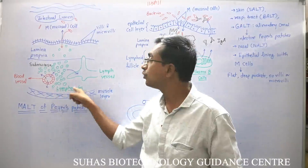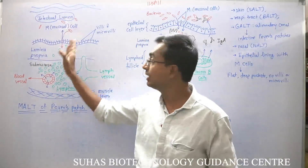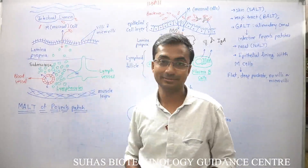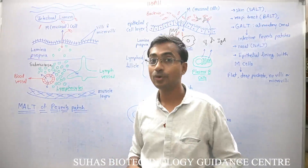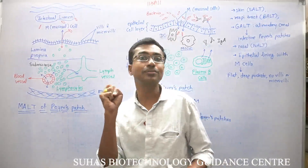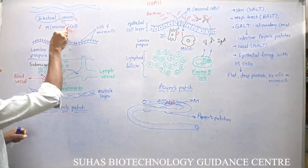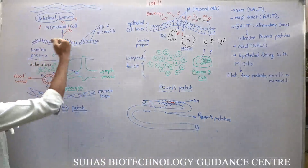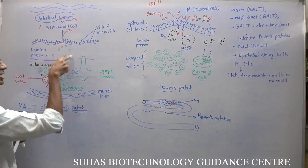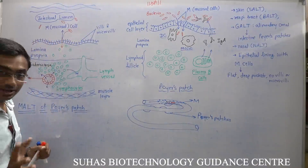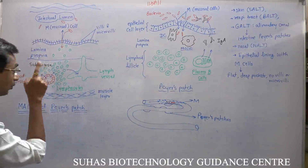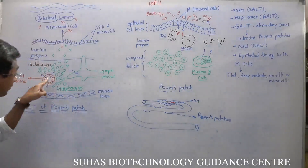As soon as microbes try to enter through the M cells, there is a bunch of lymphocytes waiting just below the M cells — they are going to enter a trap, not inside the body freely. Exactly below the epithelial layer in the Peyer's patch, this area is called the lamina propria, which is rich in lymphocytes, macrophages, and other phagocytic cells. Just below the lamina propria is a submucosal layer, and in the submucosal region there is a blood vessel — the intestine is highly vascularized.